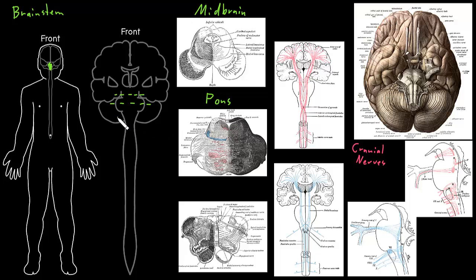Let's take a section through the medulla, cut through it and look at it from the top — that would be this guy right here. The medulla has kind of a different shape. Each one of these three main divisions of the brainstem has a little bit of a different shape.